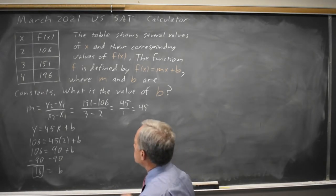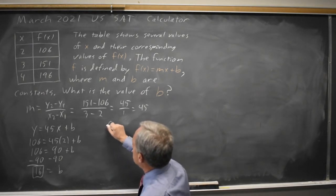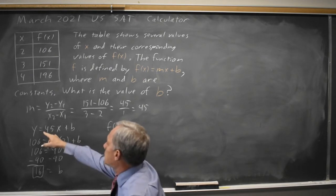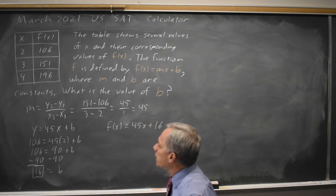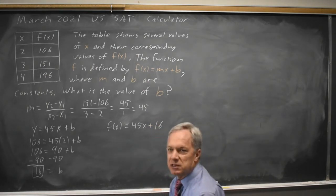If I was unsure, I can rewrite my equation. f(x) in place of y equals 45x plus b, which is 16. And I just saw that works for x equals 2.